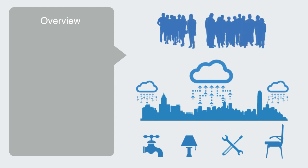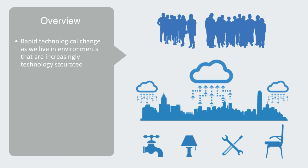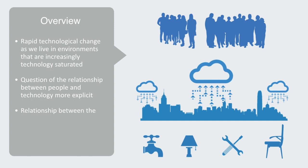Today, the information revolution is driving rapid technological change. As we live in environments that are increasingly technology-saturated, it makes the question of the relationship between people and technology more explicit than ever. And it is this relationship between the two that the domain of sociotechnical systems tries to understand, model, and optimize.